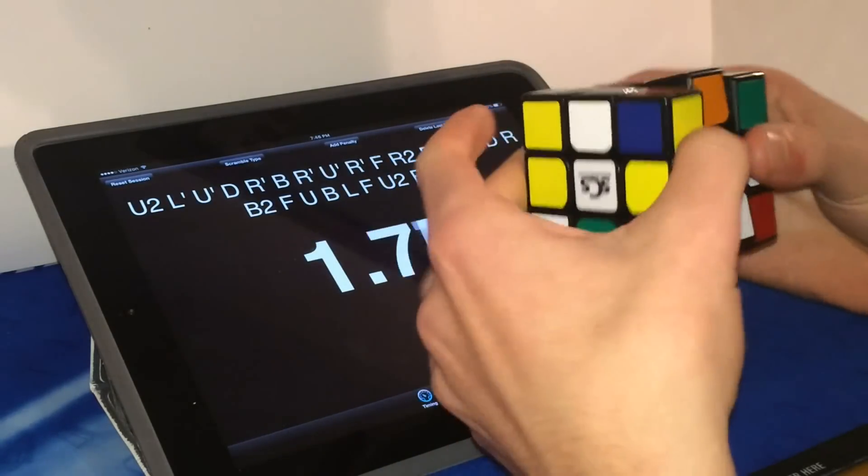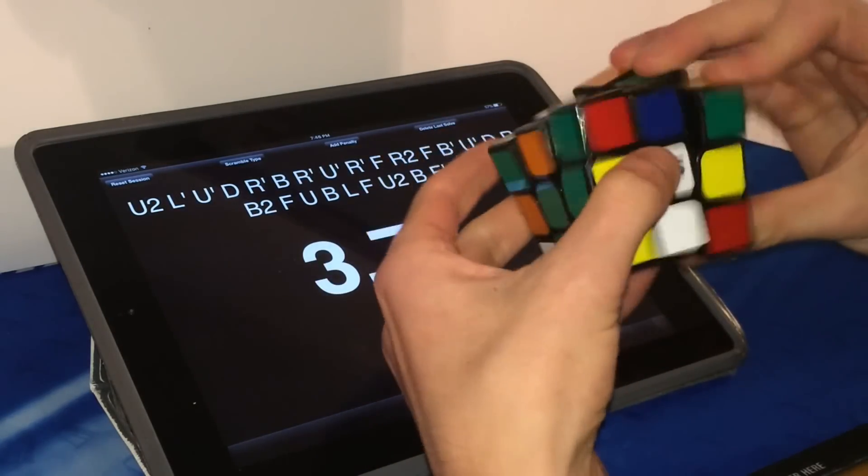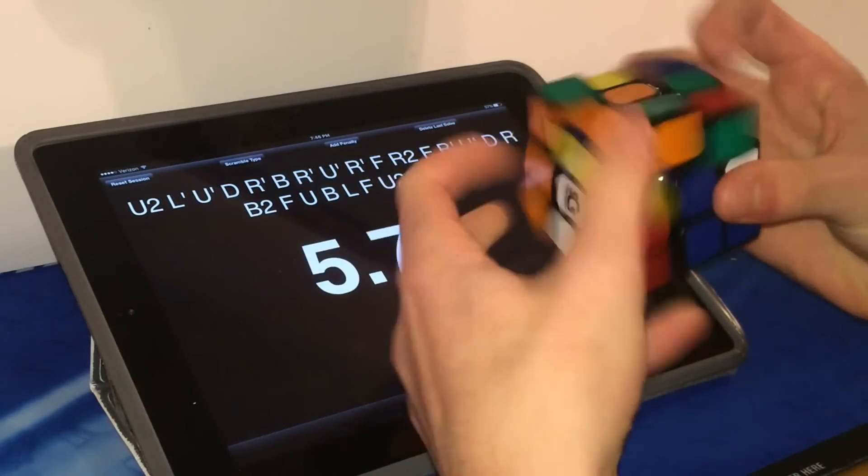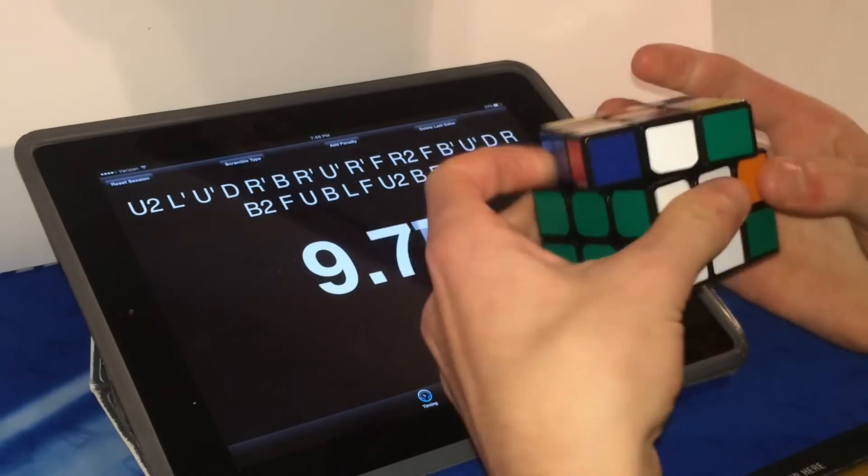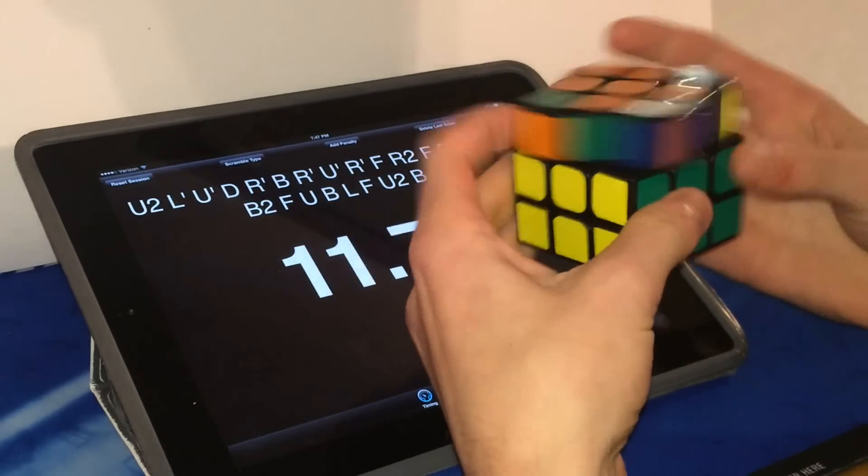So, the Moyu Aolong GT is overall a pretty great cube. Despite its catches, it doesn't lock up that much during solves, enough that it's not a major problem.